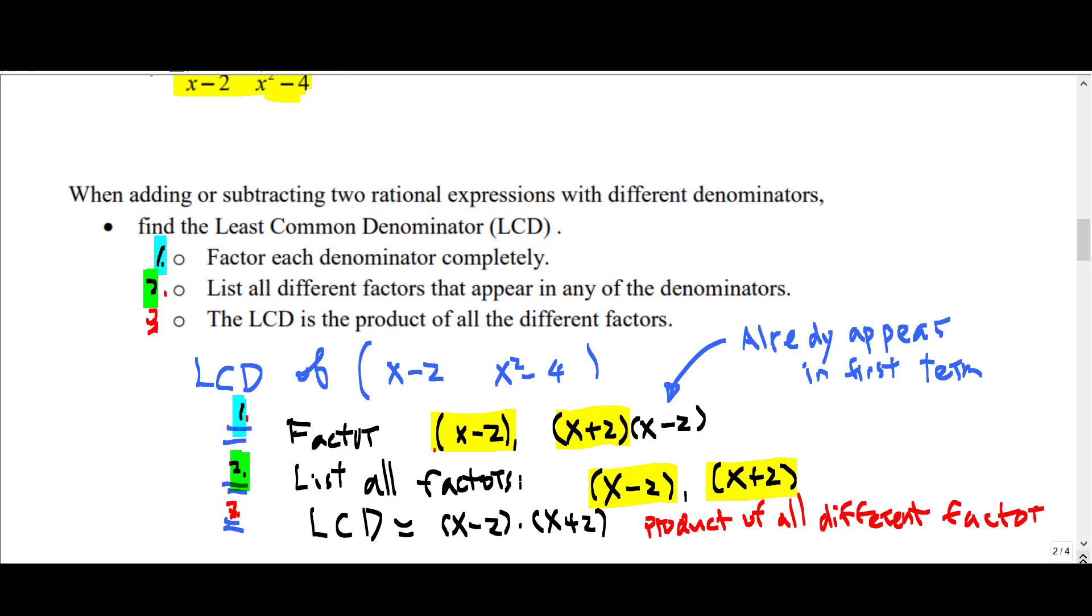Then the LCD is the product of all the different factors. So multiply x minus 2 times x plus 2 to get the LCD.